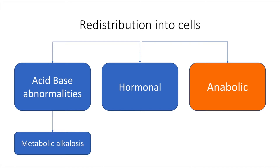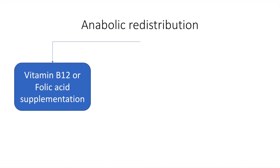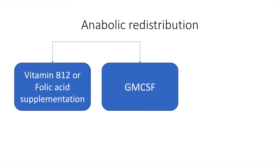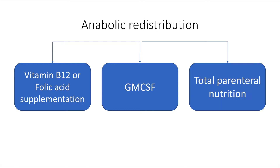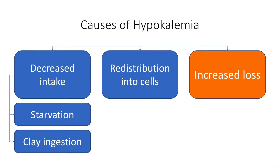Anabolic redistribution into the cell may be because of vitamin B12 and folate supplementation. It may also be because of granulocyte-monocyte colony-stimulating factors given in the setting of hematopoietic stem cell transplant or patients having received induction chemotherapy for acute leukemia. Total parenteral nutrition can also cause redistribution of potassium into the cell.